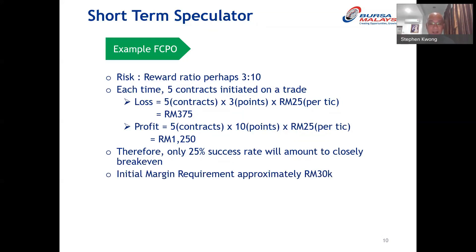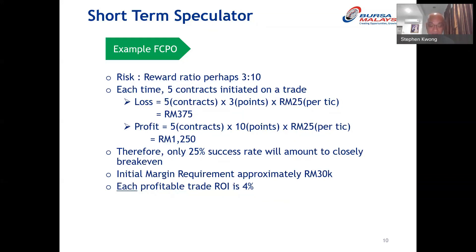The initial margin requirement for FCPO over the last couple of years is about 6,000 ringgit from Bursa. So if you do five contracts, you will have to put up 30,000 ringgit in initial margin. Each profitable trade with a 3-to-10 ratio gives you a return on investment of about 4% — that's 1,250 profit divided by the 30,000 put up. That is much higher than current annual deposit rates on an annualized basis, but because of volatility in futures, you can make 4% and easily lose 4% as well.